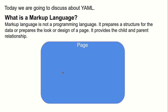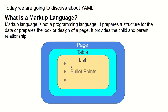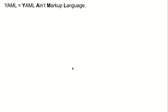Here you can see a page as the parent, inside the page there is a table, inside the table there is a list, and after that there are some bullet points that contain the data.